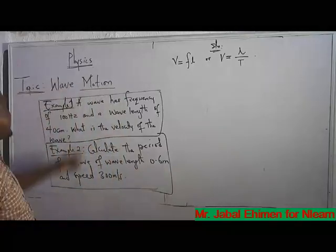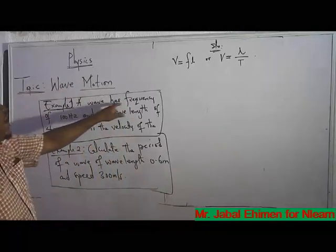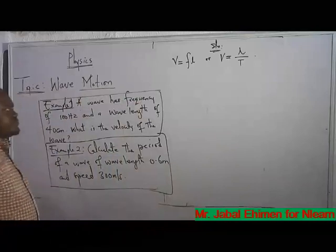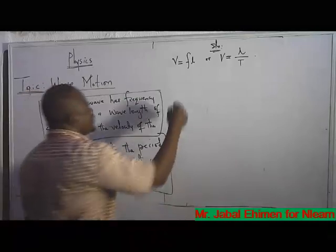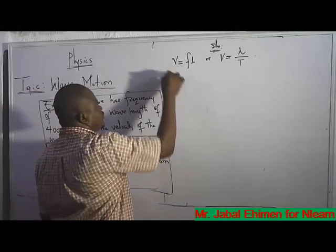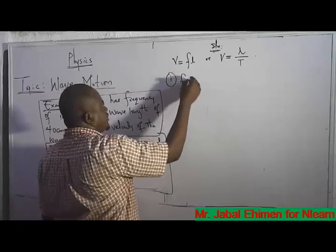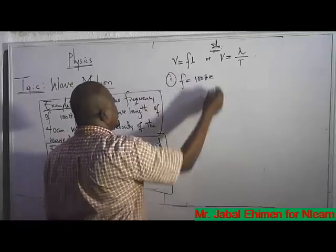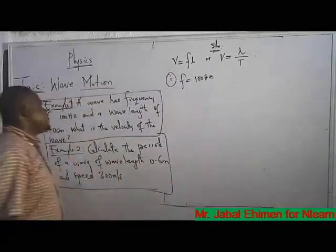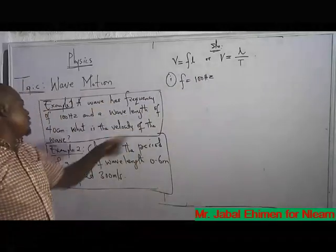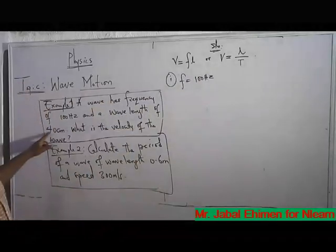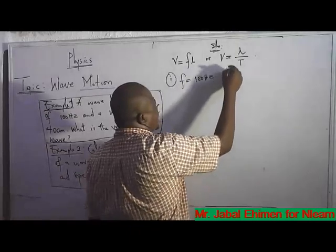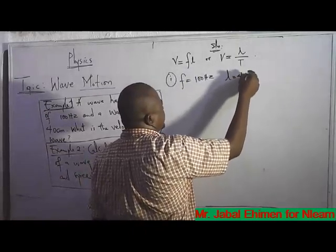We'll take the first question. It says a wave has a frequency of 100 hertz. So the frequency for question one is 100 hertz. It also says a wavelength of 40 centimeters, so lambda is 40 centimeters.